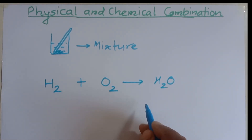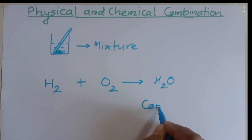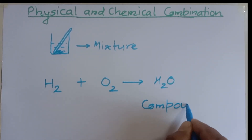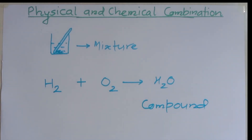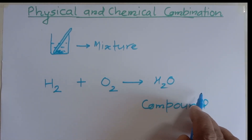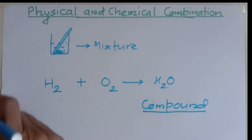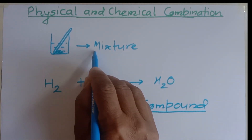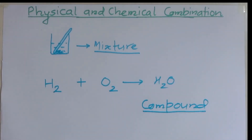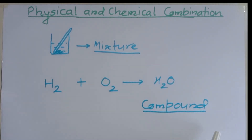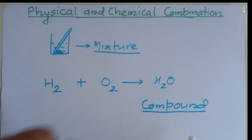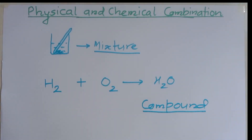By chemical combination, not a mixture but a compound forms. Chemical combination produces a compound which doesn't contain the properties of its component substances, while physical combination forms a mixture which retains all the properties of its component substances. This is the difference between physical and chemical combination.